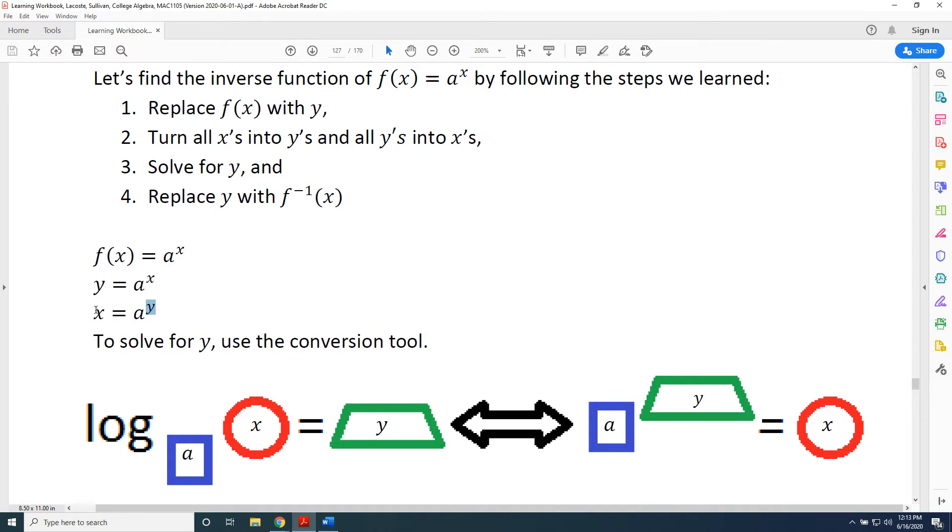So, what we have here is an exponential statement: x = a^y. So we use the exponential side of our converter. The base is a, so it goes in the blue box. The exponent is y, so it goes in the green trapezoid. The argument is x, so it goes in the red circle.